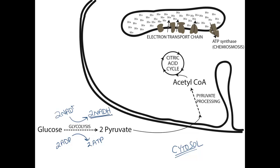Remember that NADH is an electron carrier — here it has accepted two high-potential energy electrons. The pyruvate generated during glycolysis gets transported into the mitochondrial matrix, the main space of the mitochondrion, where it's processed into acetyl-CoA. In the process of pyruvate processing, it generates some CO2 and also two more molecules of the electron carrier NADH.